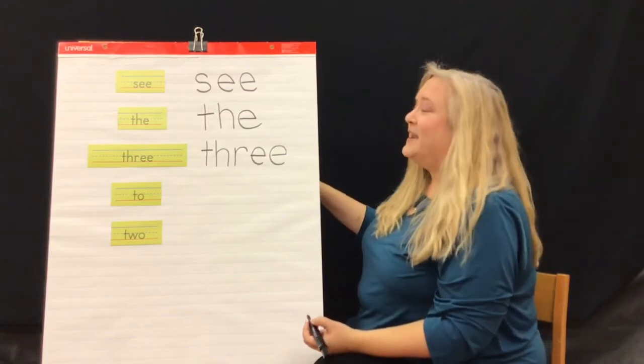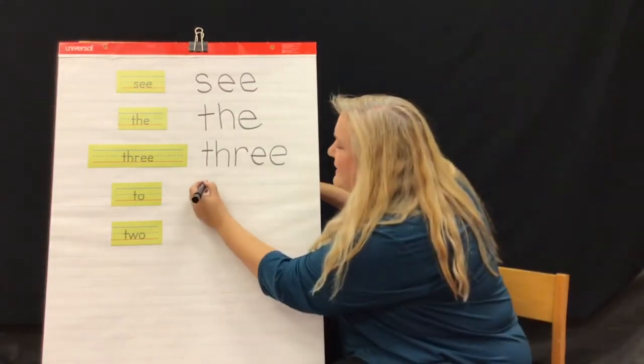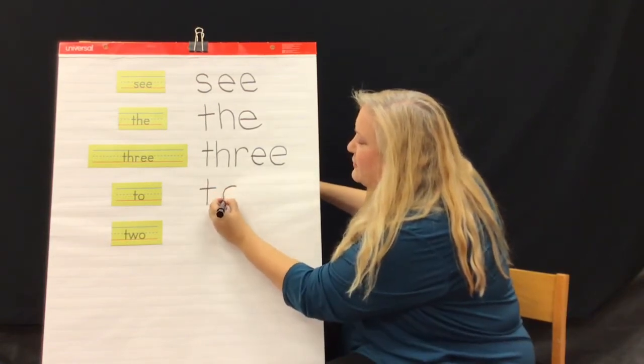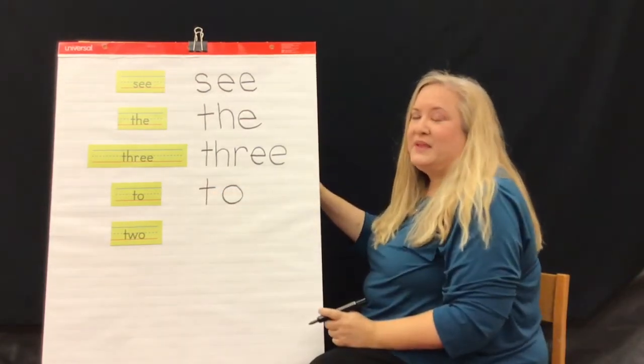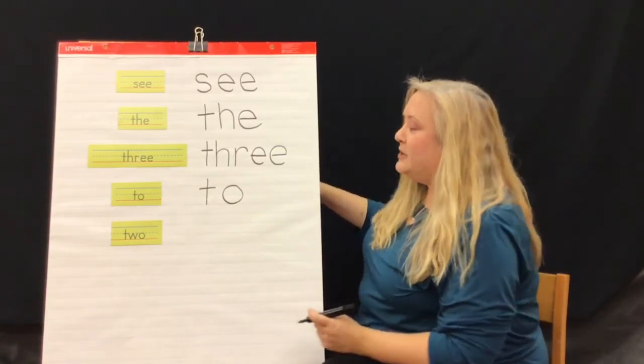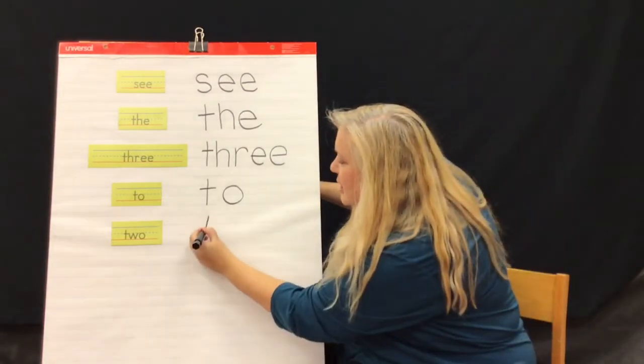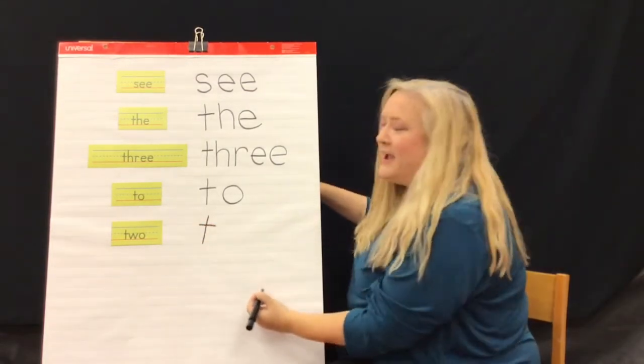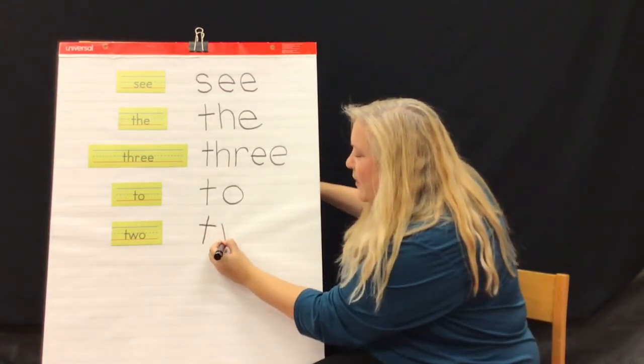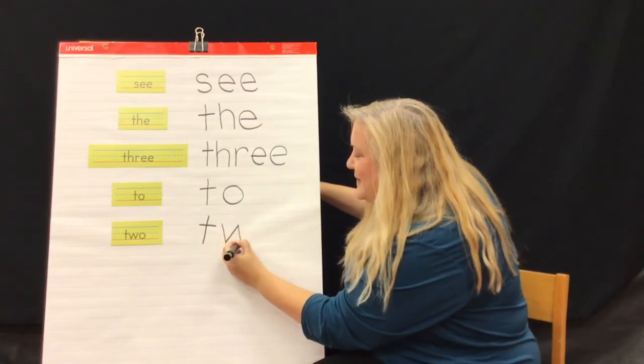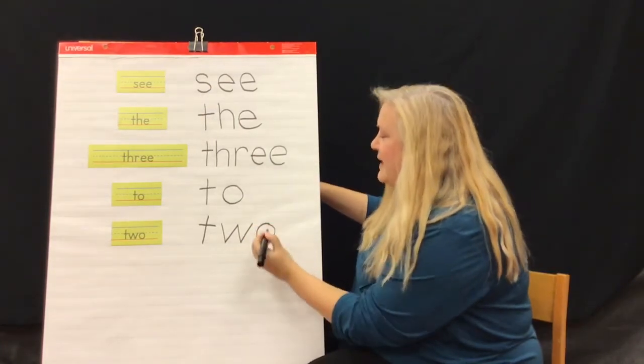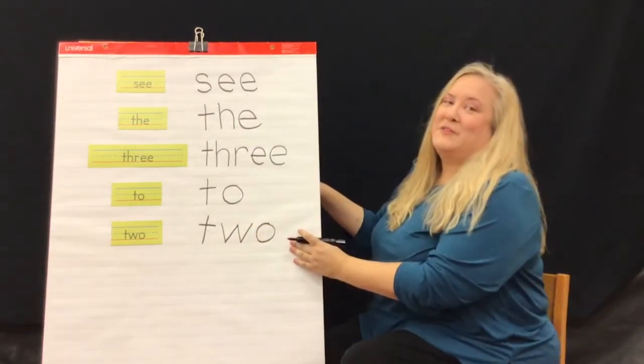Then we have the word two. Another T. Let's make a tall line with a little cross in the middle over there and a circle for the O. And we have the word two. Then we also have the word two, but this is the number two, T-W-O. So, let's make our tall line, cross a little line over here, and the W is four short diagonal lines. One, two, three, four. That's a lot. And then we have our O. Let's make our O. And that's the word two for the number two.